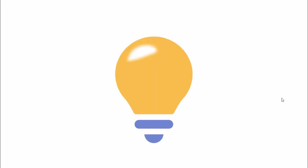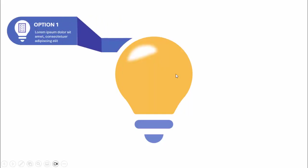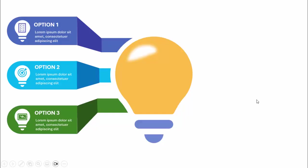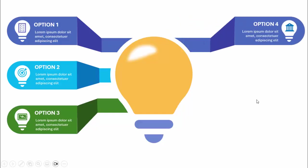In today's tutorial I'm going to show you how to create a six-options infographics slide in PowerPoint. This is how the slide looks — I have created this bulb, and when I click it, comes the first option where you can add your icon, the title, and the detailed text with some different color combinations. Then comes the second option, the third, and on the right side comes the fourth, fifth, and sixth.